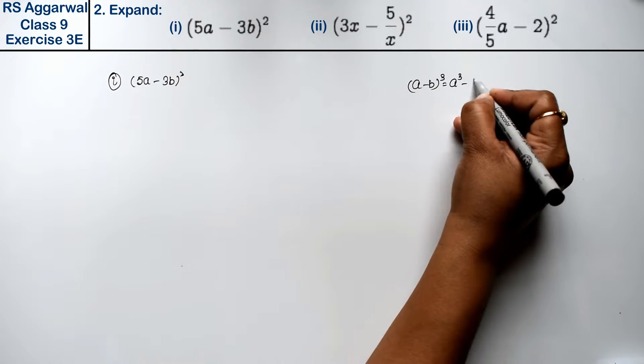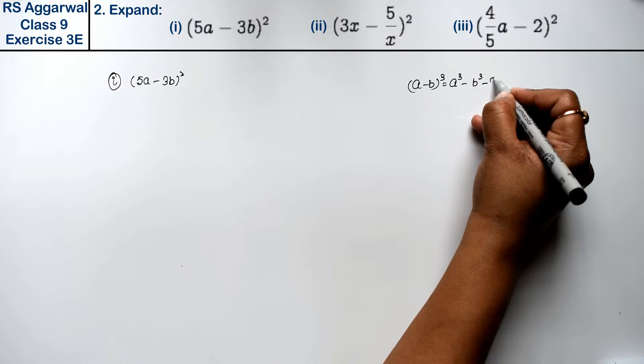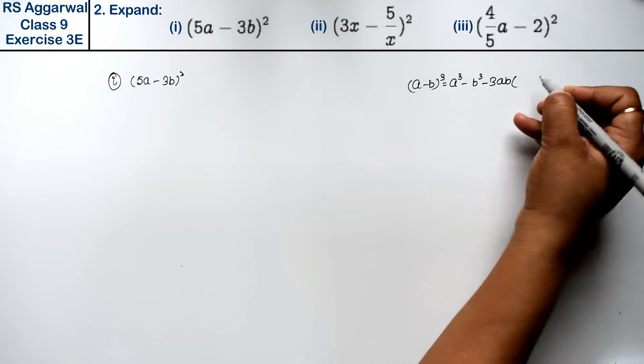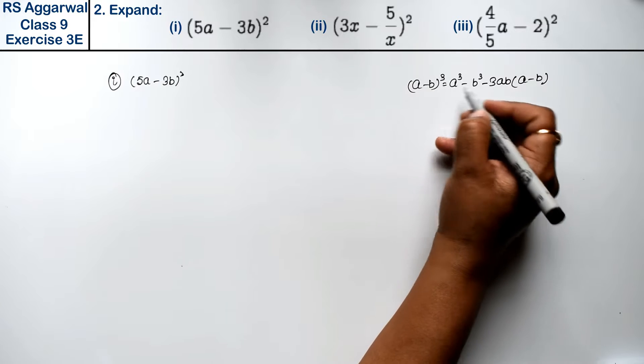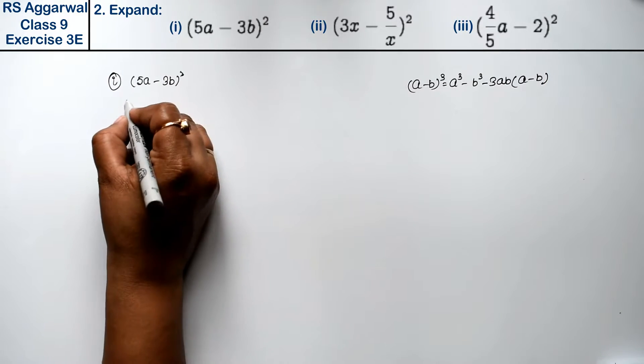a³ - b³ - 3ab(a - b). Friends, minus ki case mein saare minus hote hai aur plus ki case mein saare plus hote hai, right friends.